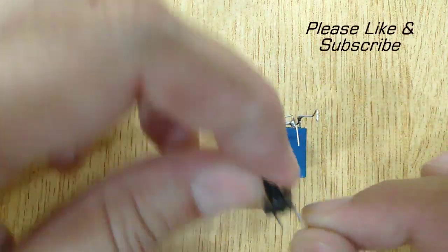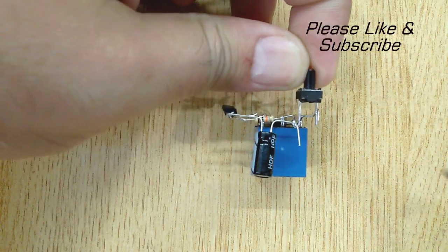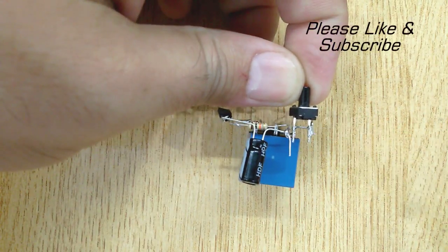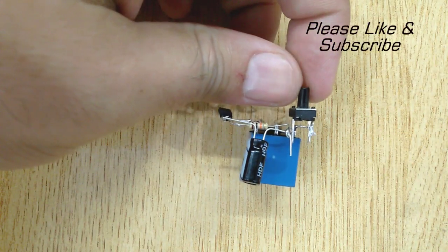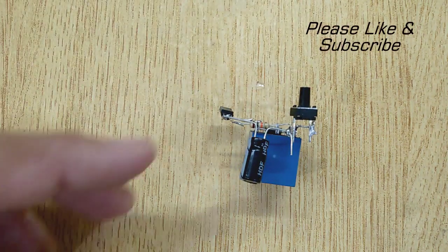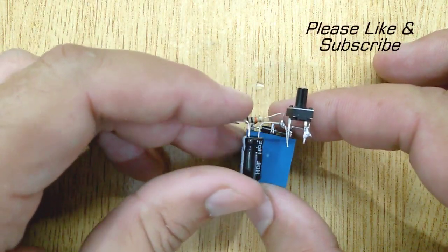And at last, solder one pin of the micro touch switch with the second pin of the relay, and the other pin of the micro touch switch with the resistor and capacitor.